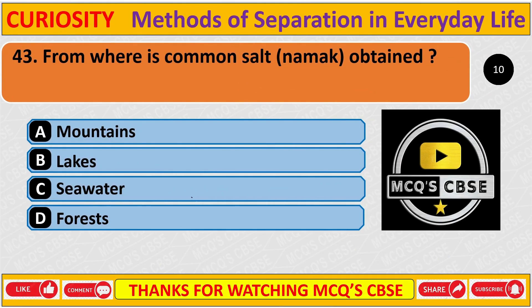Question: From where is common salt (namak) obtained? Correct answer is C: Seawater.